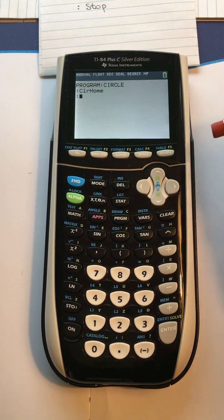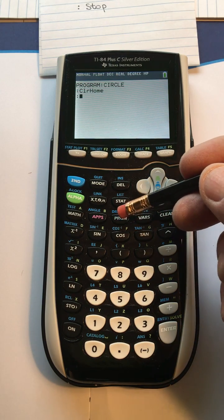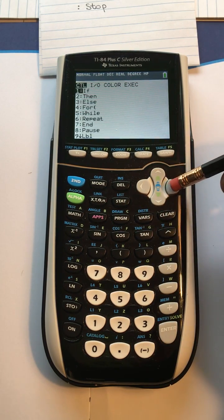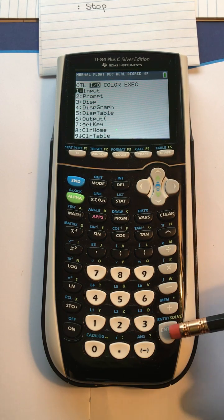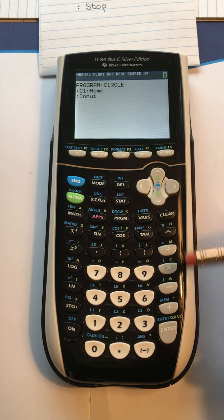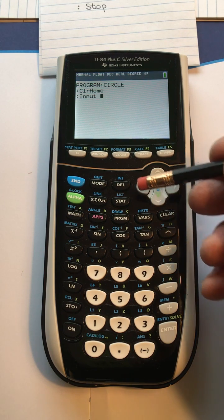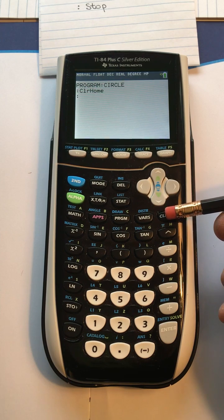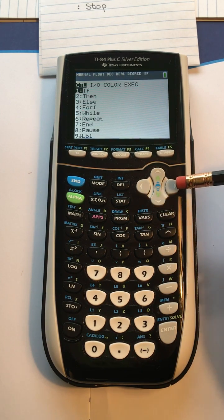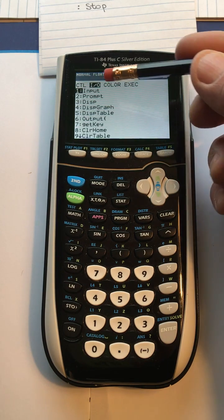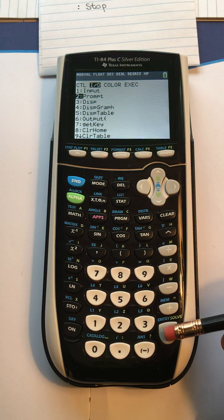Instead of a space it puts capitals, so we want to get Prompt which is a command. We press program, I-O, and notice Prompt is number two, so you press two or enter. So we did input, that would be a mistake, so to clear that you delete or clear, press program to go back where you want it to go, I-O, and you can press two or go down to Prompt and press enter.